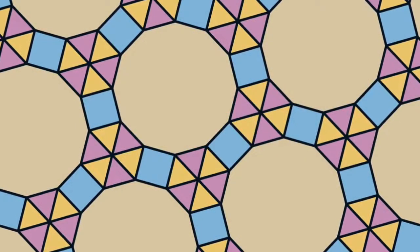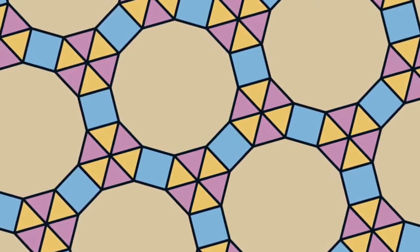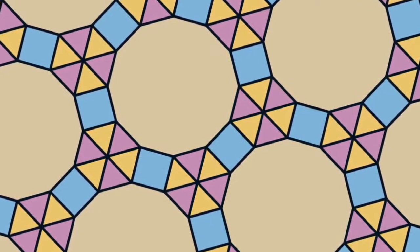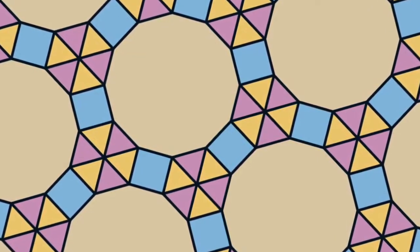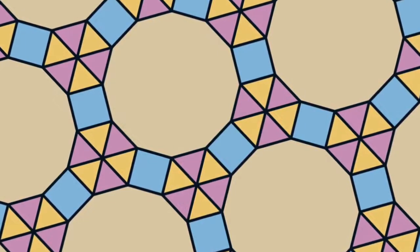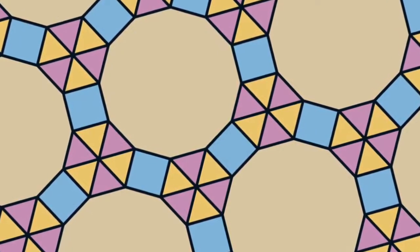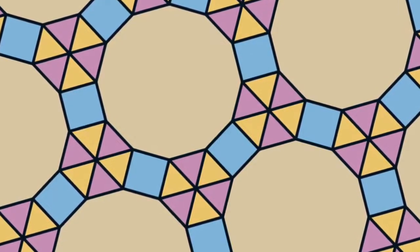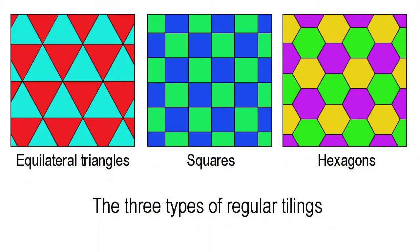The words tiling and tessellation are used interchangeably. Tessellation comes from the Latin tessellatus, meaning of small square stones or tiles, but is used today to describe a perfectly fitting pattern made of any shaped tiles. In many tessellations, the tiles consist of regular polygons — straight-sided shapes in which all the angles are equal and all the sides are the same length. A regular tiling is made from just one kind of regular polygon.